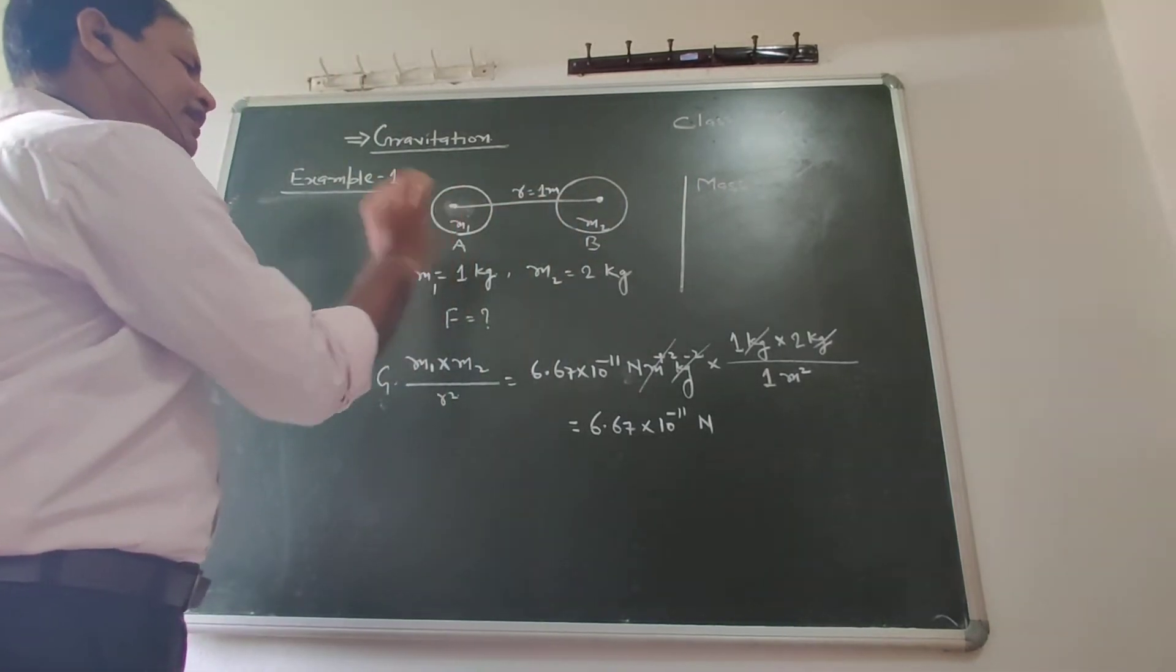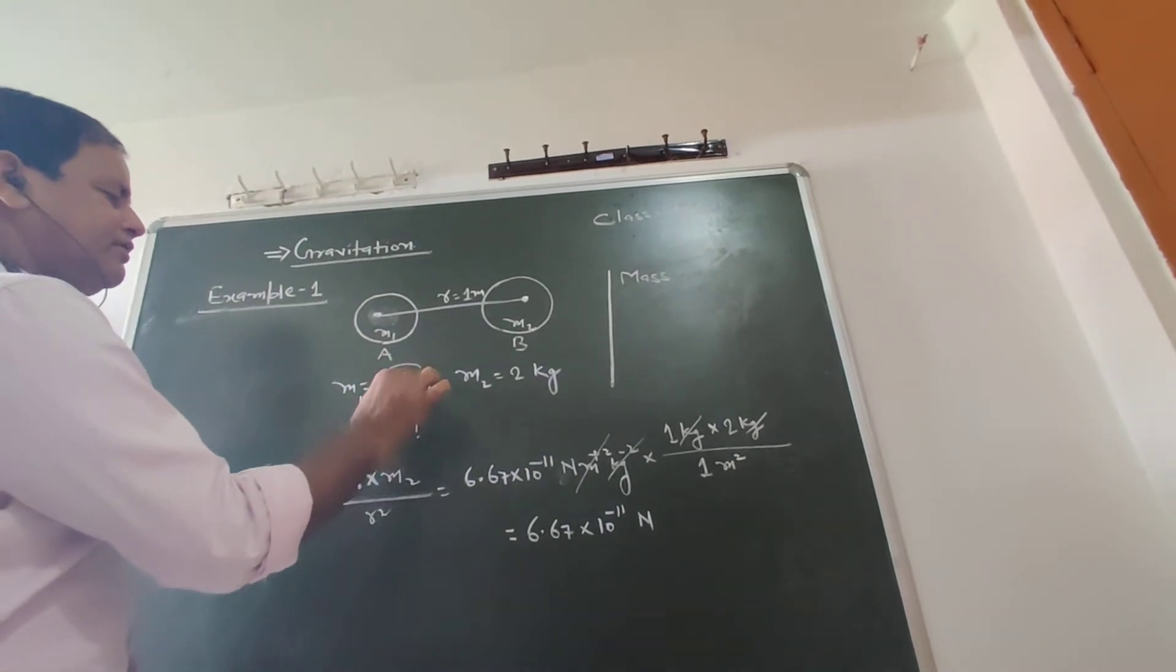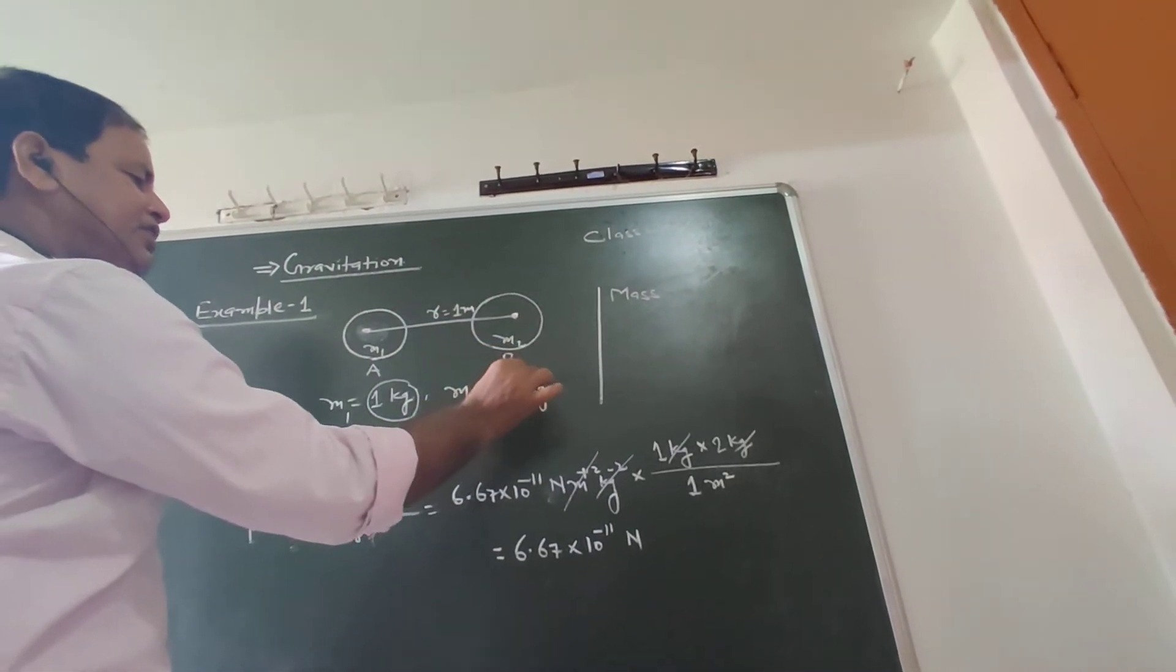There are two bodies, A and B. Mass of A is 1 kg and mass of B is 2 kg.